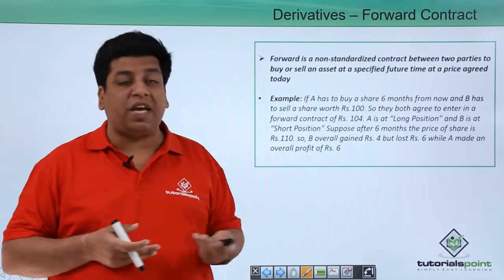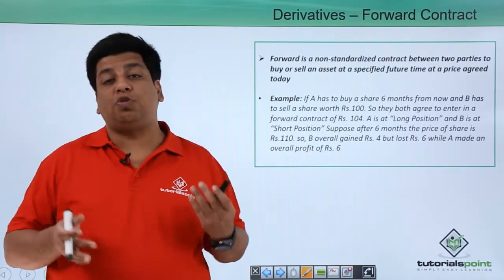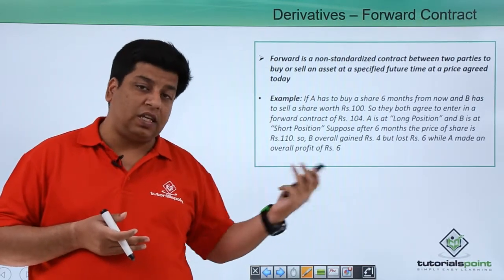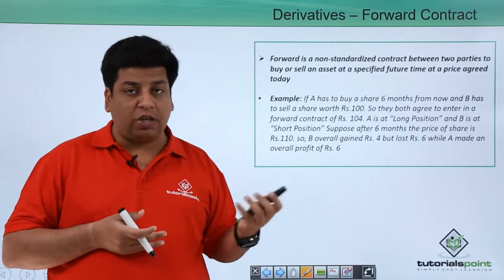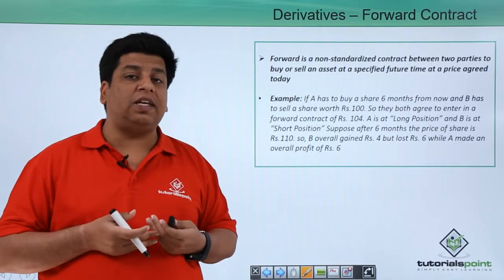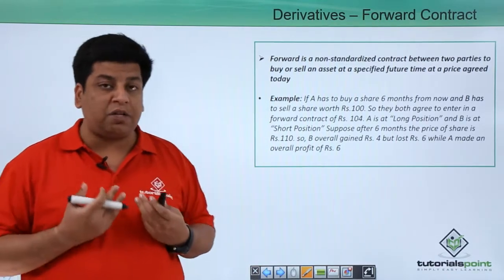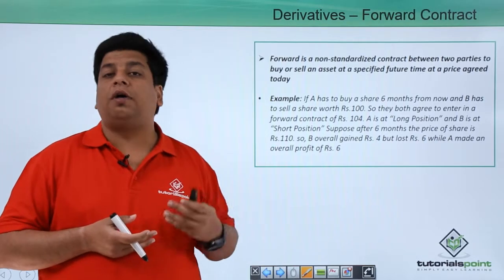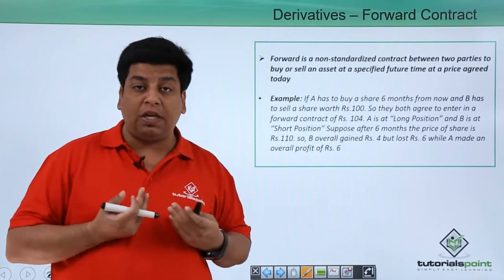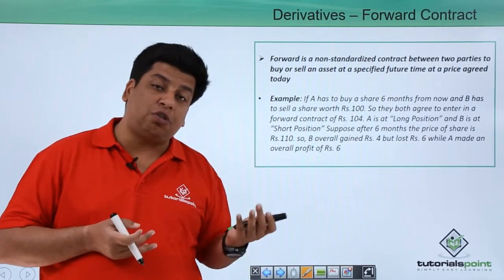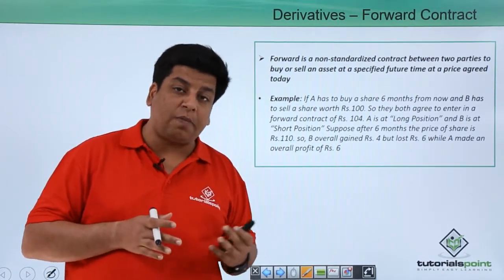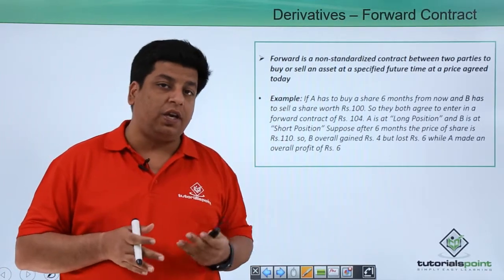specified future date at a price agreed today. That means you agree on the price today — what price you are going to buy or sell in the future — and you also agree on the date when this transaction will take place. This is basically to help protect oneself from future price movements of the asset, since prices could move in your favor or against you.